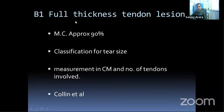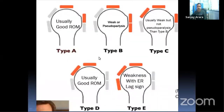Full thickness tears are the most common type, approximately 90%. They can be classified by size in centimeters or by the number of tendons involved. Oling et al. described a classification based on number of tendons, dividing the rotator cuff into five segments: superior subscapularis, inferior subscapularis, supraspinatus, infraspinatus, and teres minor. In Type A, only the superior subscapularis is involved; patients usually have good range of motion with pain only.